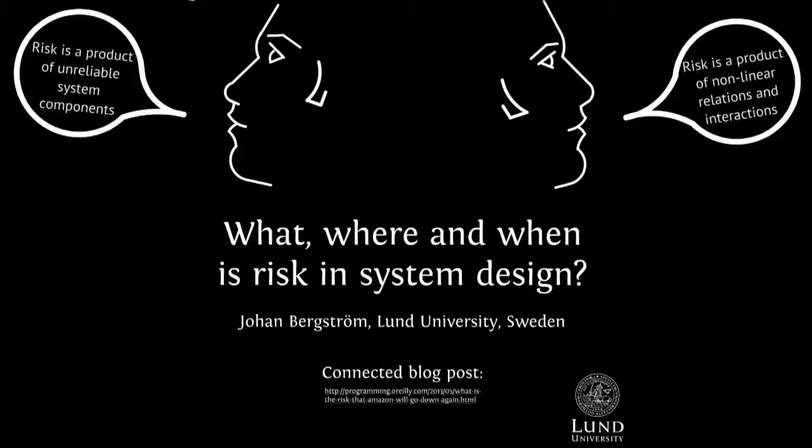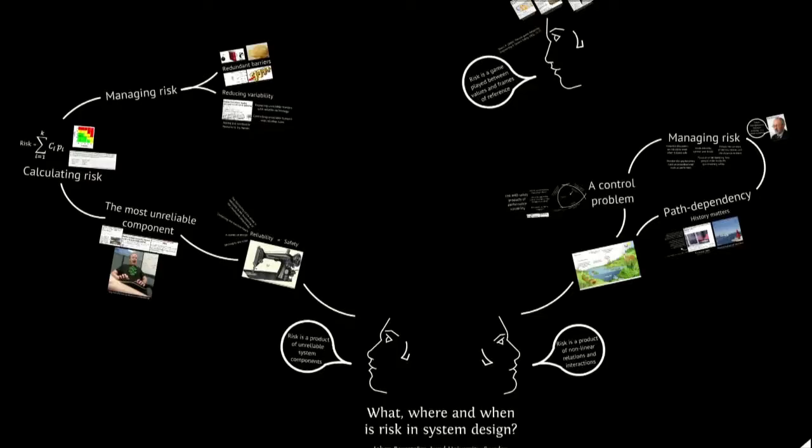I've also published a connected blog post at O'Reilly for you to check out. What time will allow me to do here this morning is to outline two pretty extreme views on how to interpret risk in web performance and web operations. The first view of risk is risk as a product of unreliable system components. We will contrast it with risk as a product of non-linear relations and interactions — risk as a product of complexity. I've drawn a mind map for us to use this morning, and we will see some principles of these two views, and end up with some strategies for how to manage risk given each perspective.